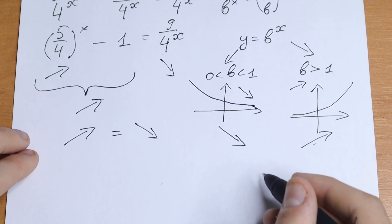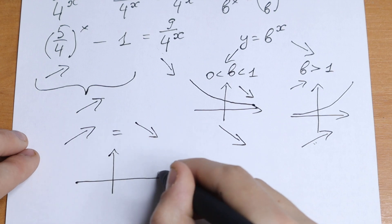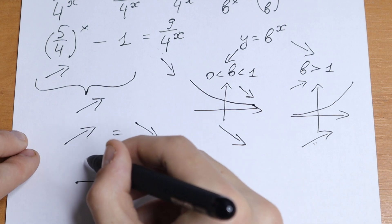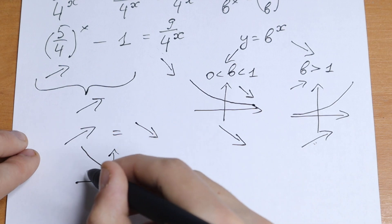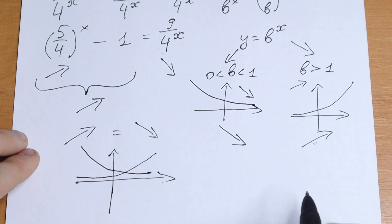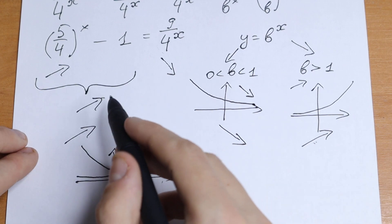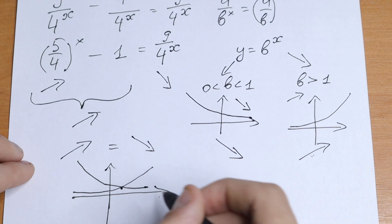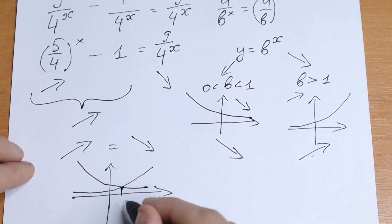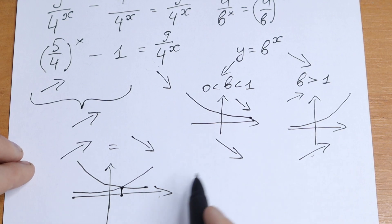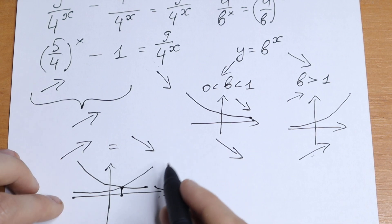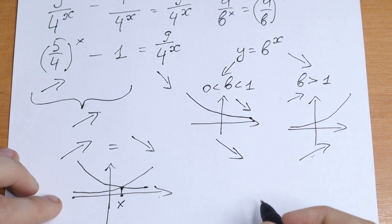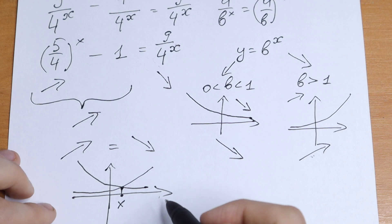So if we draw a graph, what will we have? We will have an exponential increasing function and an exponential decreasing function — a decreasing function and an increasing function. The only way this equation works, that these lines intersect, is that they intersect at exactly one point. There is no way there will be 2 or 3 points of intersection — only one. So we will have only one point of intersection and only one root x.